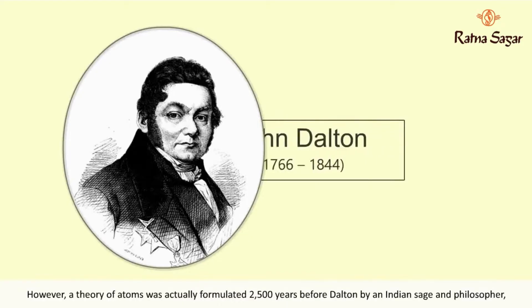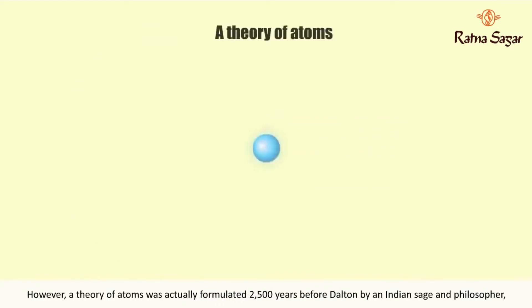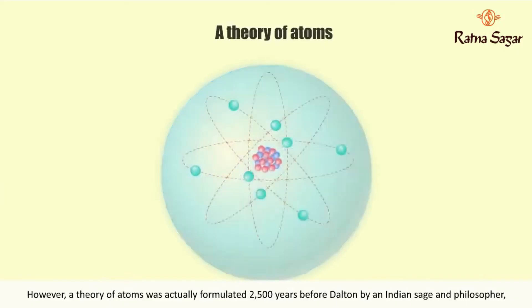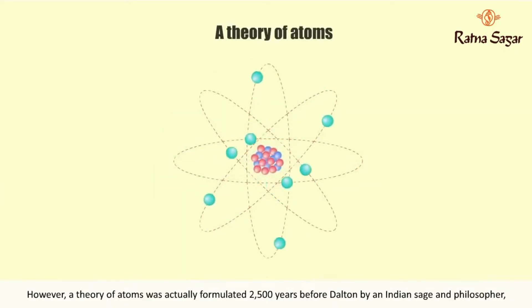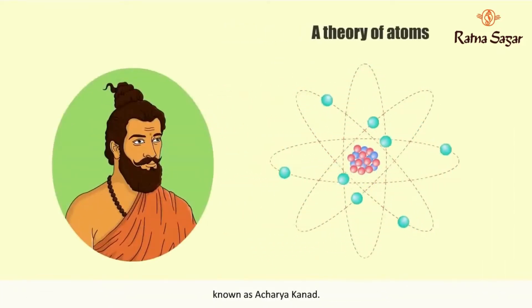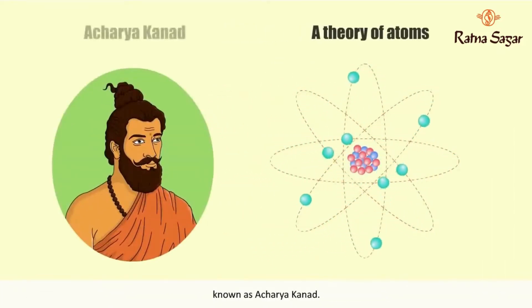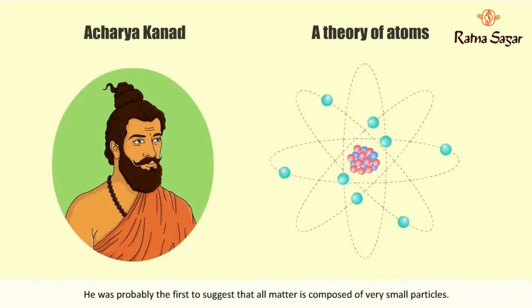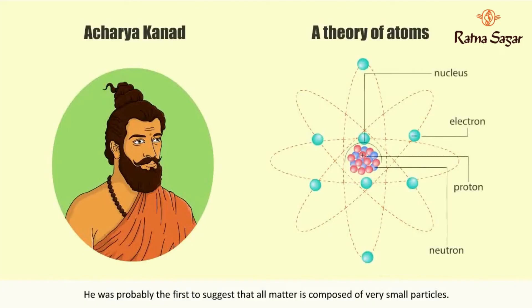However, a theory of atoms was actually formulated 2,500 years before Dalton by an Indian sage and philosopher known as Acharya Karnath. He was probably the first to suggest that all matter is composed of very small particles.